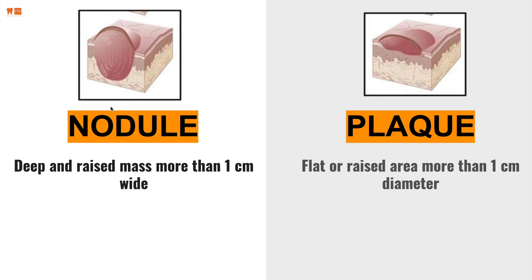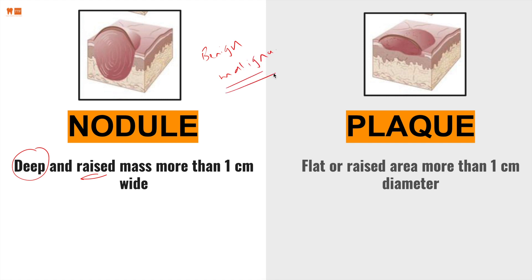A nodule is similar to a papule because it is raised. However, nodules are extremely deep as well. When we talk about nodules, we'll notice that we can get into things like — are they benign, are they malignant? We're talking cancers and so on. They're more than one centimeter wide, so the diameter, whether you consider it vertical or horizontal, is going to be more than one centimeter. That's a nodule.